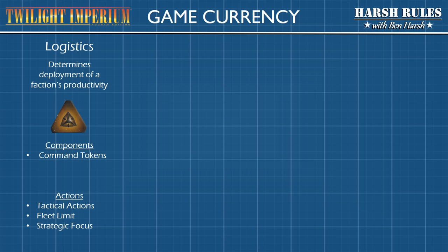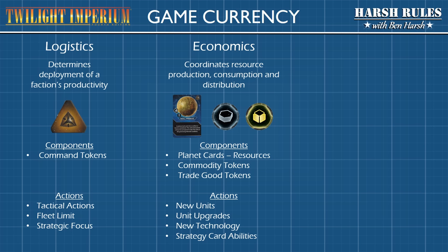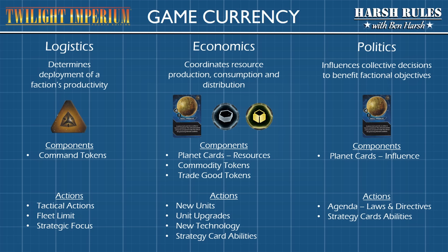By using Command Tokens, players can allocate their faction's productivity to support military and strategic objectives. With Economic Currency, players can spend their planet's resources and exchange commodities for trade goods to purchase and upgrade units and technologies, as well as execute specific strategy card abilities. By mastering the political currency of influence, players can influence collective decisions that benefit their faction's objectives with new laws and directives, as well as specific strategy card abilities.